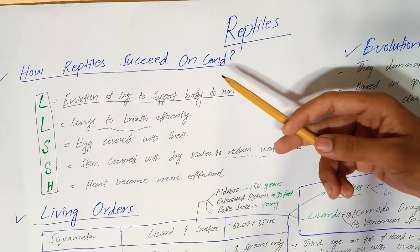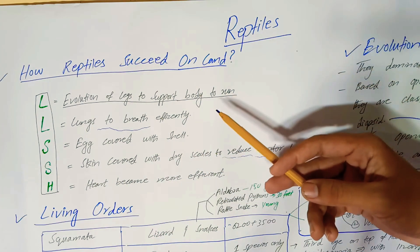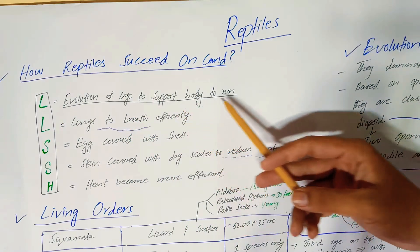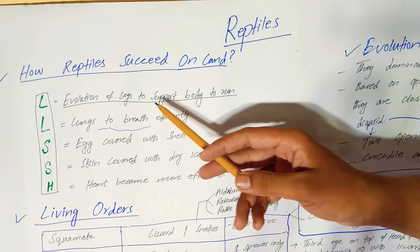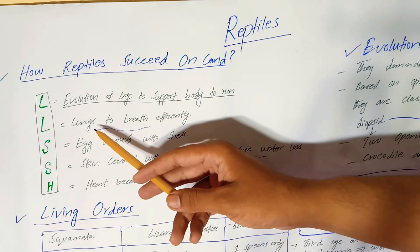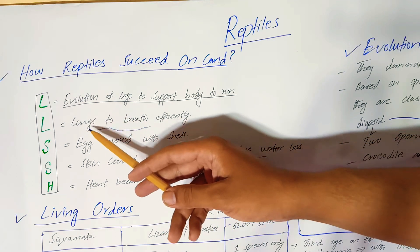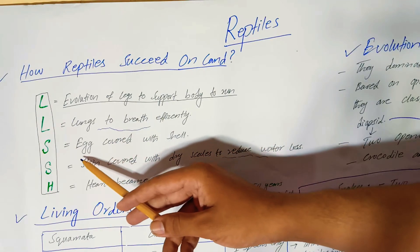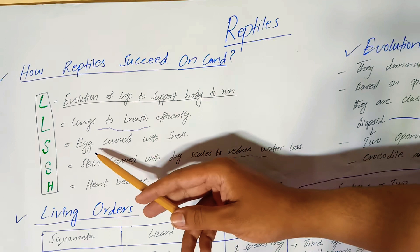The survival of Class Reptilia on land was made possible by five key characters. The first character is the evolution of legs to support the body and to run — legs evolved which gave body support and enabled movement on land. Additionally, lungs formed which allowed them to breathe efficiently on land. Furthermore, their eggs became covered with a shell, reducing the risk of water loss from eggs.